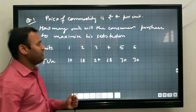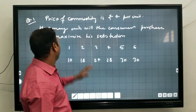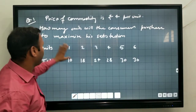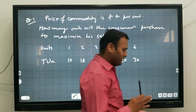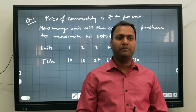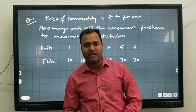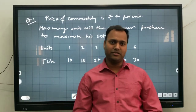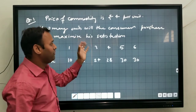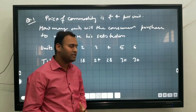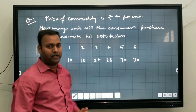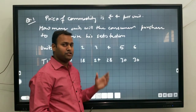Here the first question: the price of the commodity is 4 rupees per unit. How many units will the consumer purchase to maximize his satisfaction? The meaning of consumer equilibrium is where the consumer gets the maximum level of satisfaction. We have to find out by using the formula for the one-commodity and two-commodity case, and we can easily solve how many units are required to satisfy the consumer's needs.